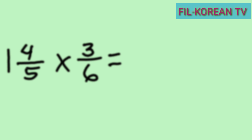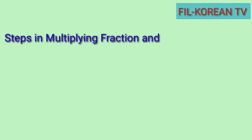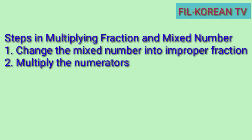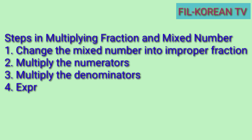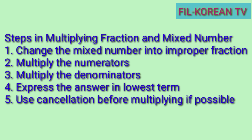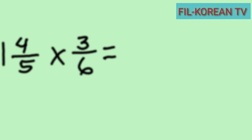Let's solve this problem to show the steps in multiplying mixed numbers and fractions. First, change the mixed number into an improper fraction. Second, multiply the numerators. Third, multiply the denominators. Fourth, express the answer in lowest terms. Fifth, use cancellation before multiplying if possible.